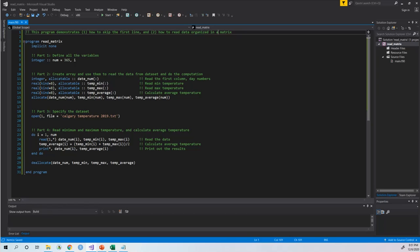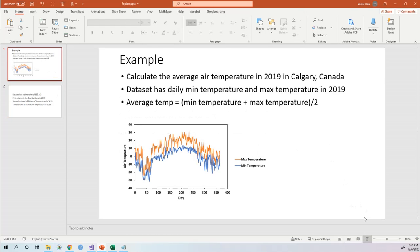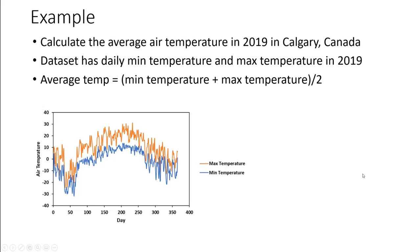In this video I'm going to show you a very simple example and hope this can help you. So here is the example: suppose you have a project and you need to calculate the average air temperature in 2019 in Calgary, Canada. The data set you have right now has the daily minimum temperature and the daily maximum temperature in 2019, and you need to calculate the average temperature.